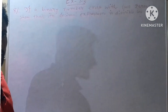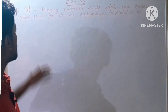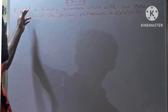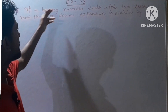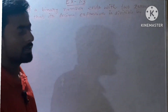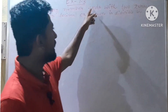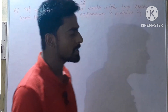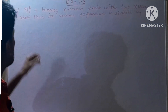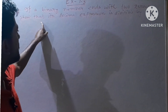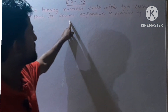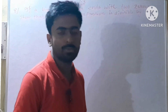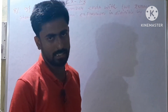Question number 8. The question says that if a binary number ends with two zeros, show that its decimal expansion is divisible by 2 squared.